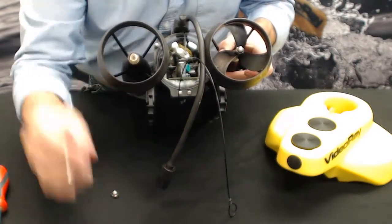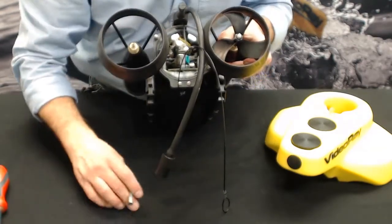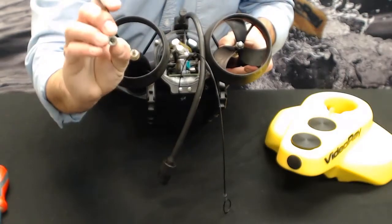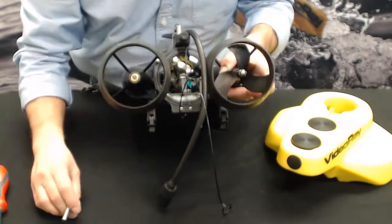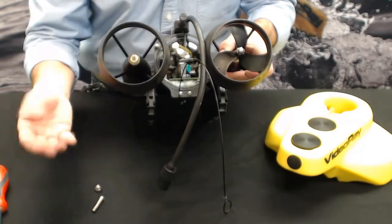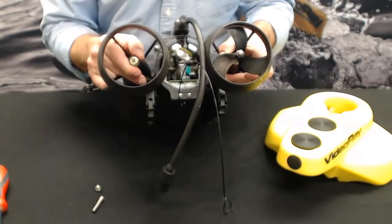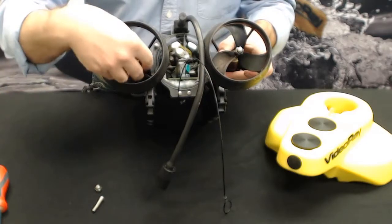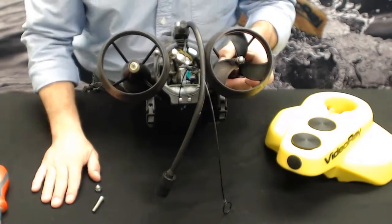This is the same procedure you would use if you were going to change the cartridge seal. At this point, you would pop off the cartridge and replace it with another one. But right now, we're just doing the propeller.